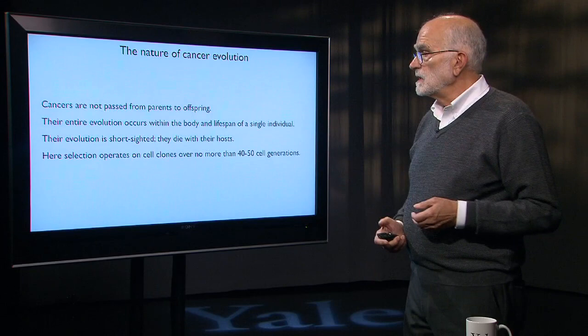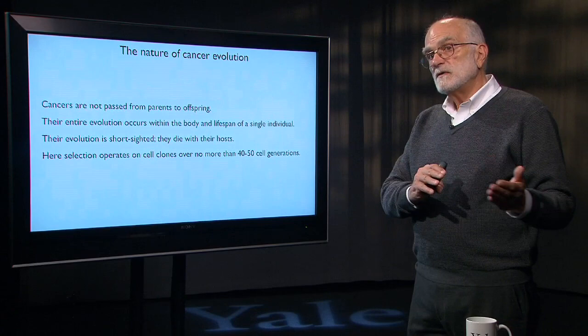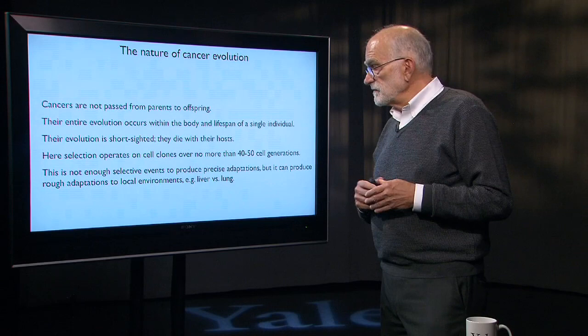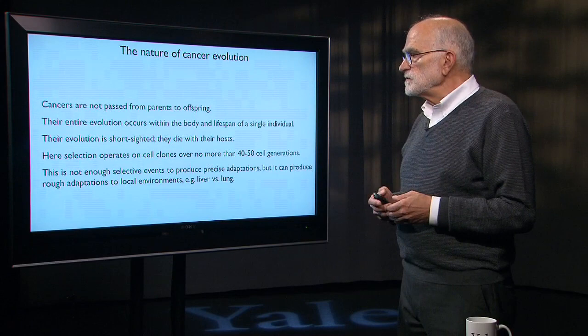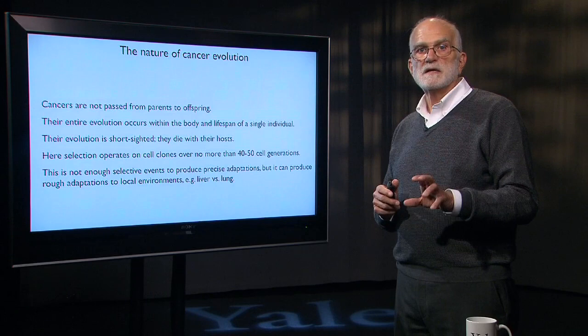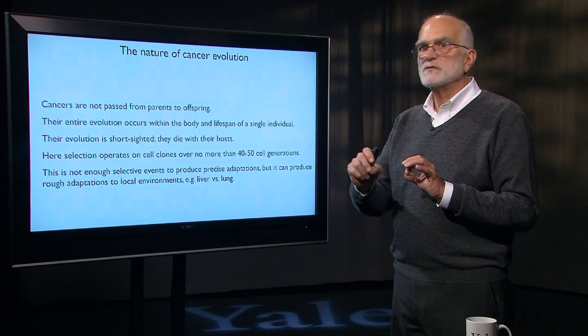Selection is operating on cell clones over no more than about 40 to 50 cell generations. That's not enough selective events to produce what we see as precise adaptations — it won't produce polished elegance, but rough and ready stuff. But it can produce adaptations to local environments. In metastasizing cancers, we can recognize adaptation to lung tissue versus kidney tissue versus liver or brain tissue.